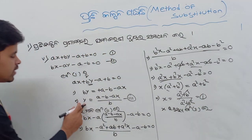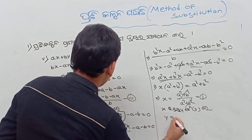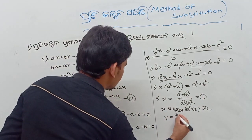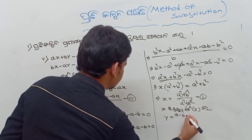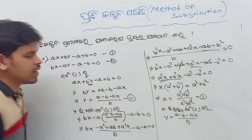Equation 3. y equal to a minus b minus ax by b — bx.